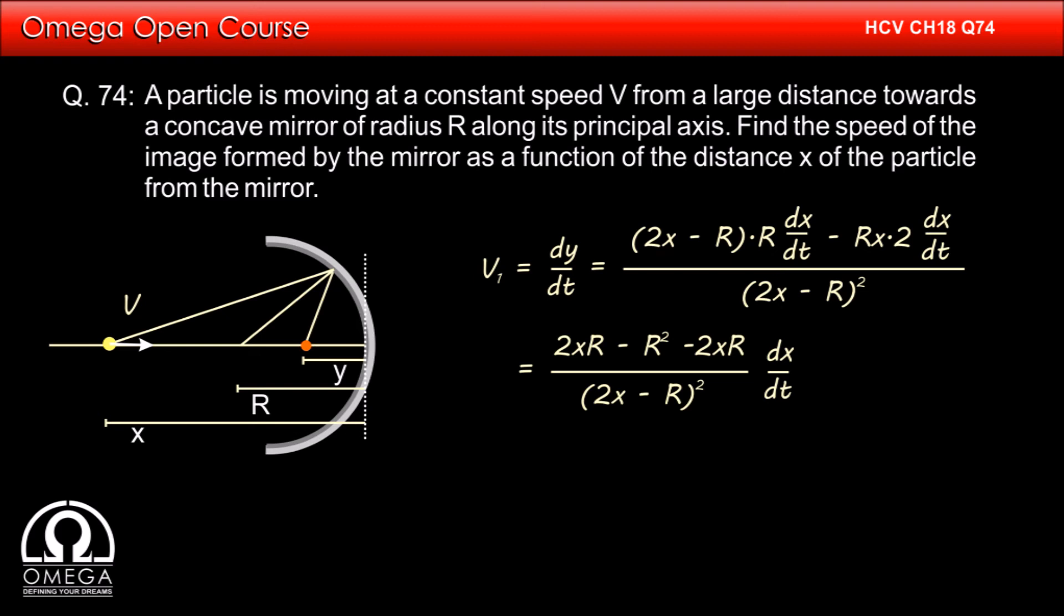Also, since the object is moving with speed capital V, the magnitude of dx by dt is equal to capital V. Therefore, dx by dt is equal to minus capital V.